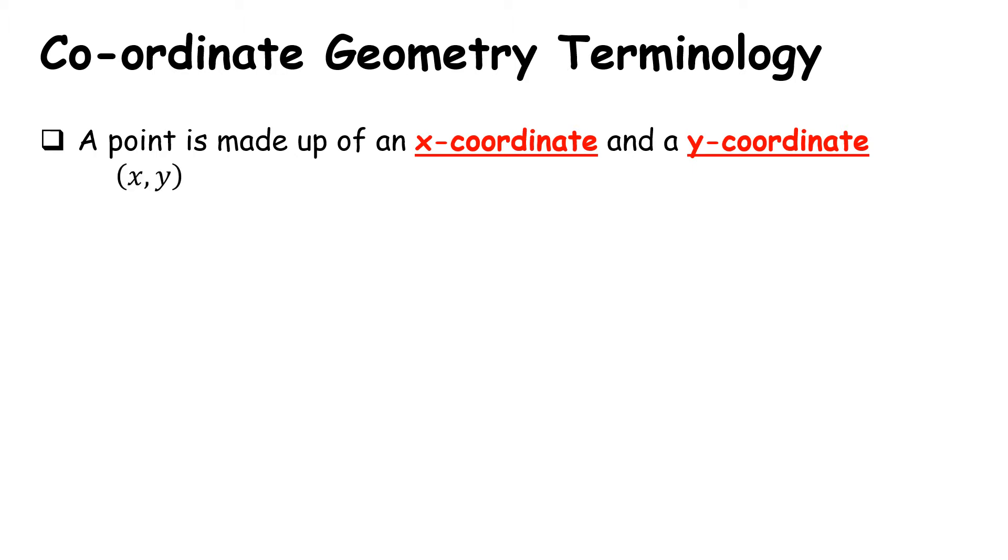So let's just look at some terminology. A point is made up of an X coordinate and a Y coordinate. As you're working through questions it's important to understand are they asking for a point, are they asking for the X, or are they asking for a Y. So you need to make sure whatever the question is asking for that's what you give. So our point is X comma Y given in a bracket.